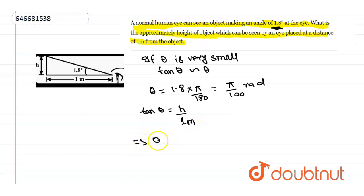theta in place of tan theta. What is h? That we have to calculate. And what is distance? That is 1 meter. So write the value of theta, that is equal to π/100 radians, and that is equal to h/1. So from here we can write h is...